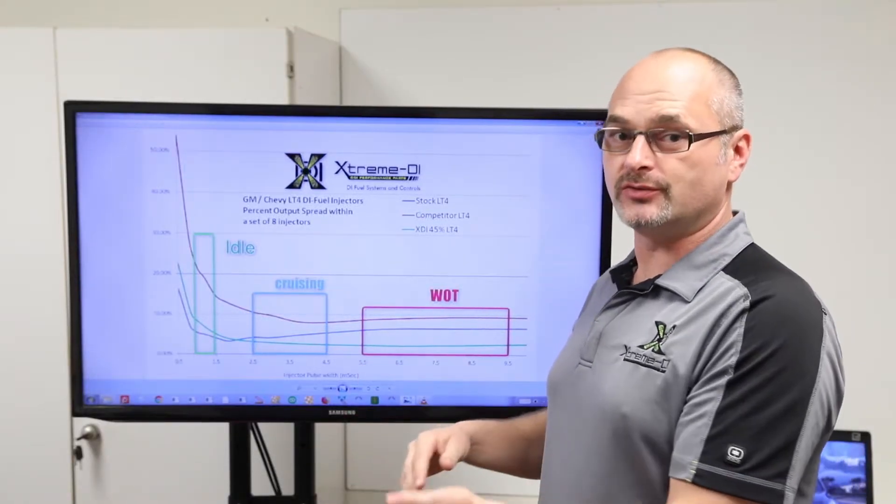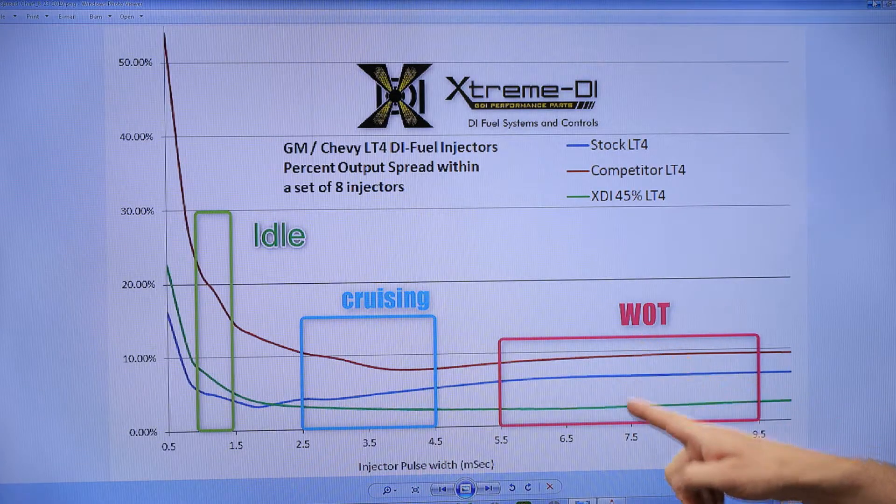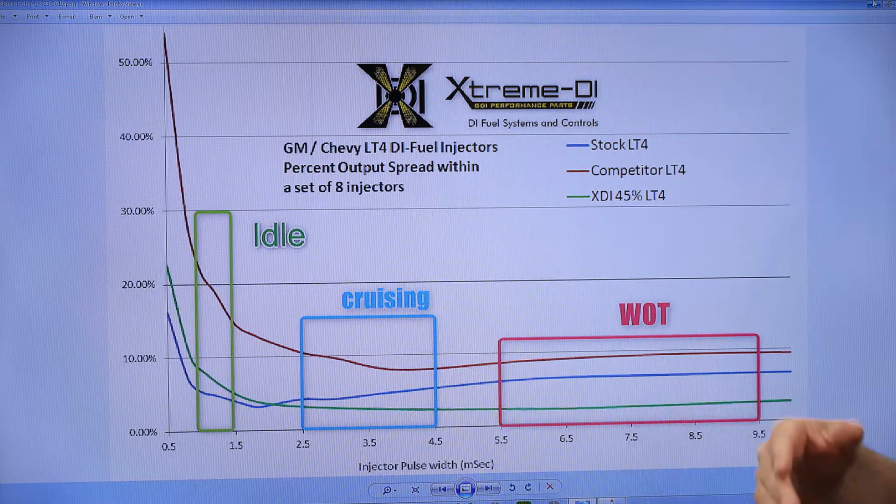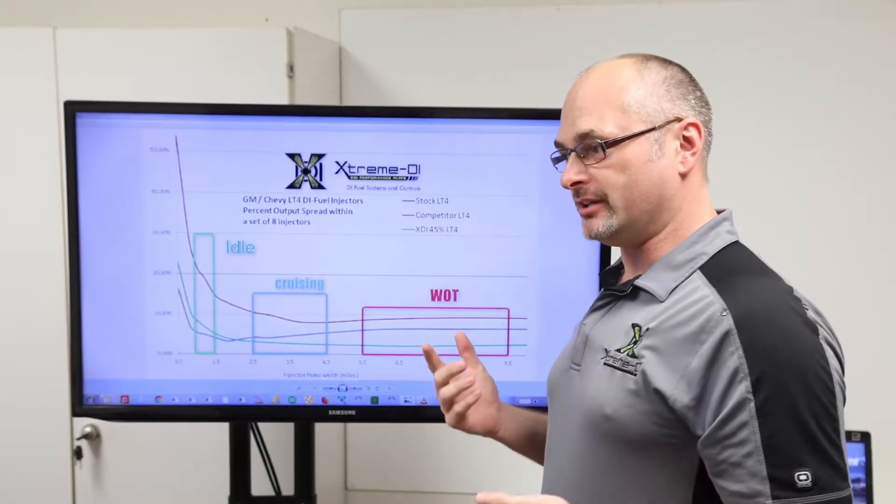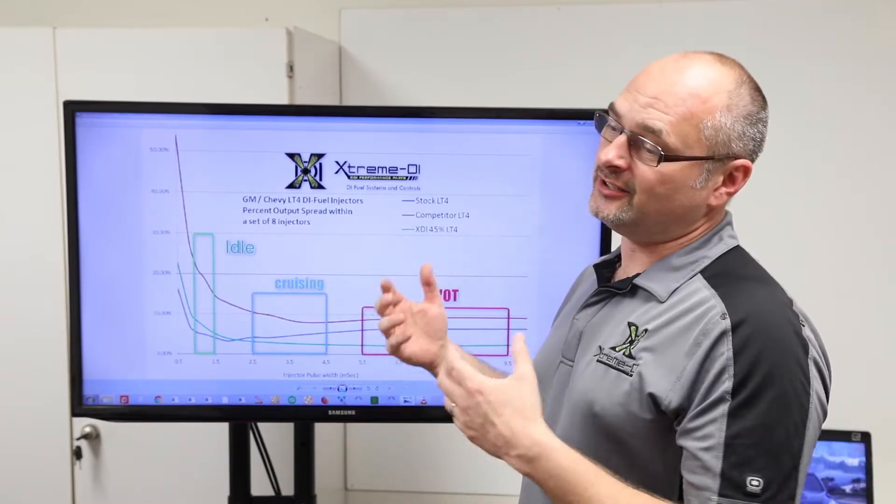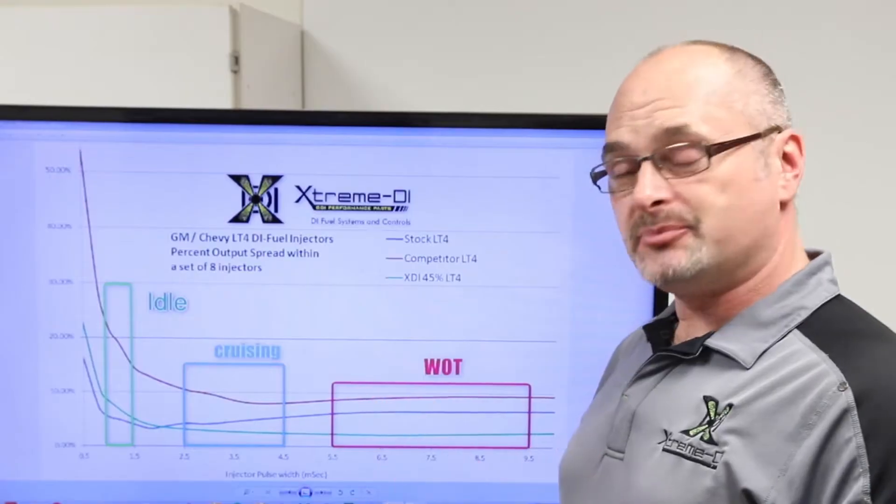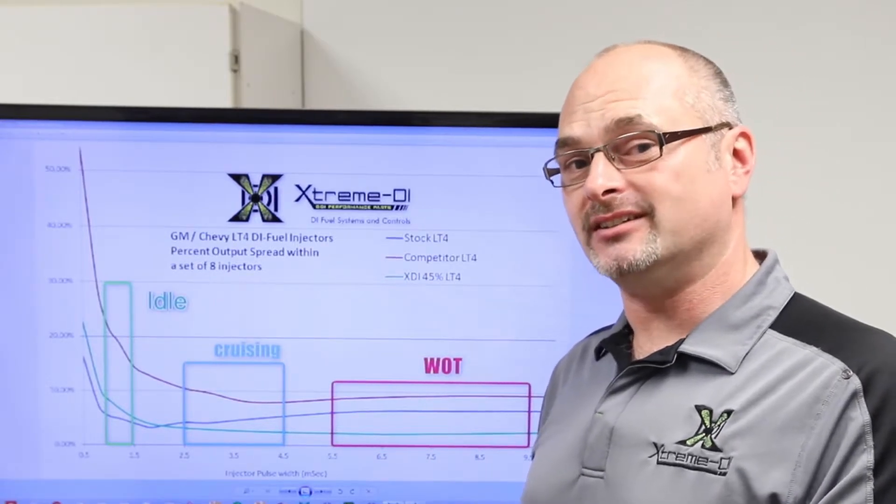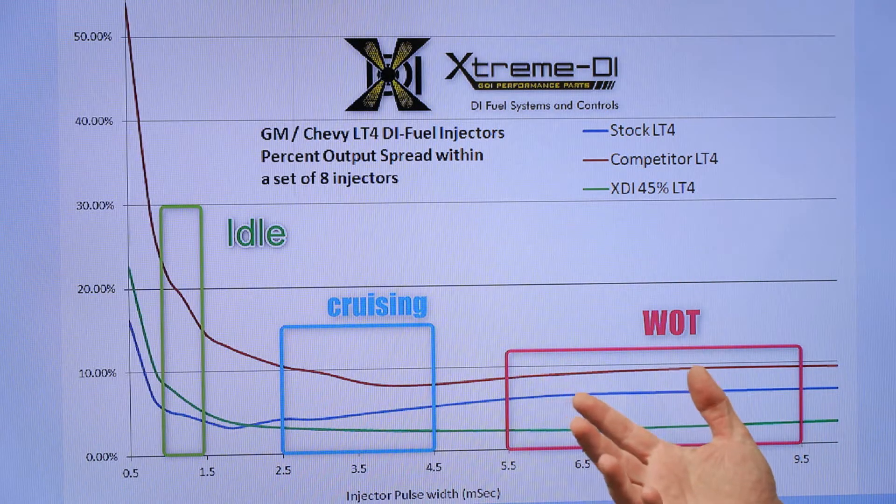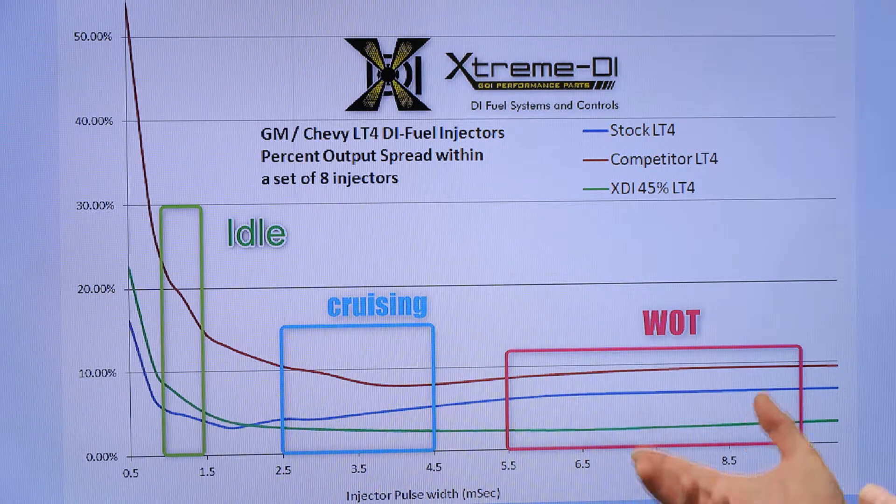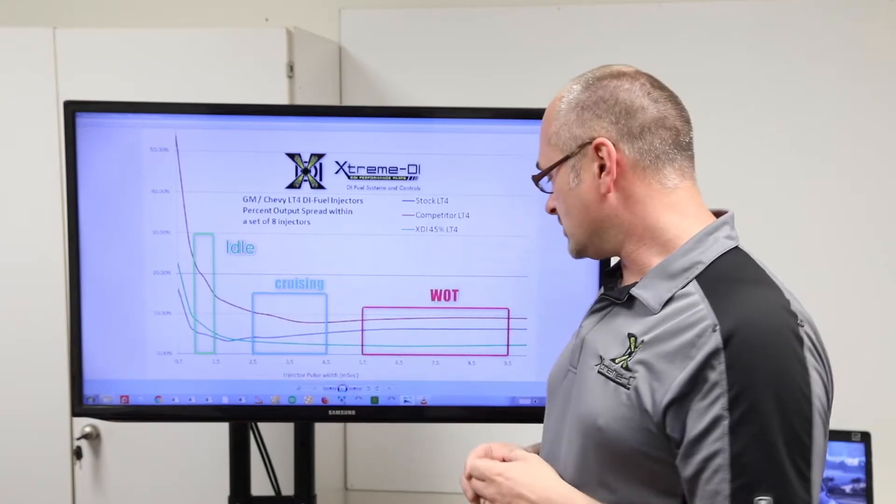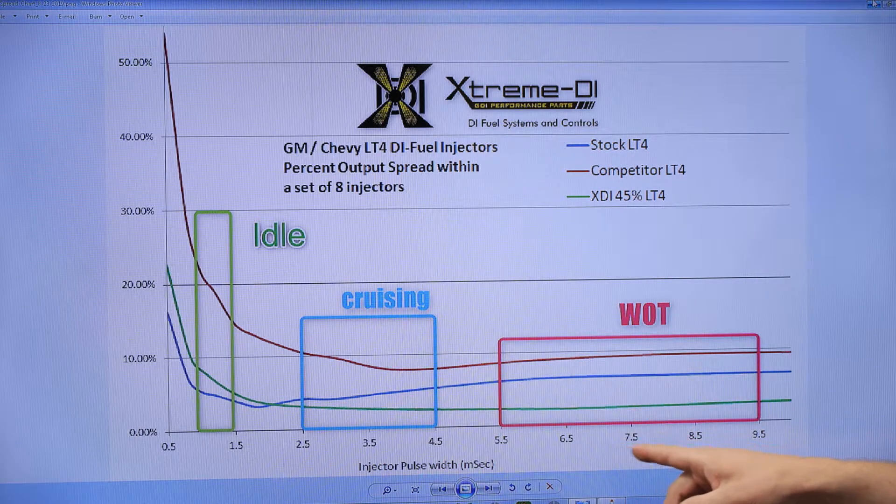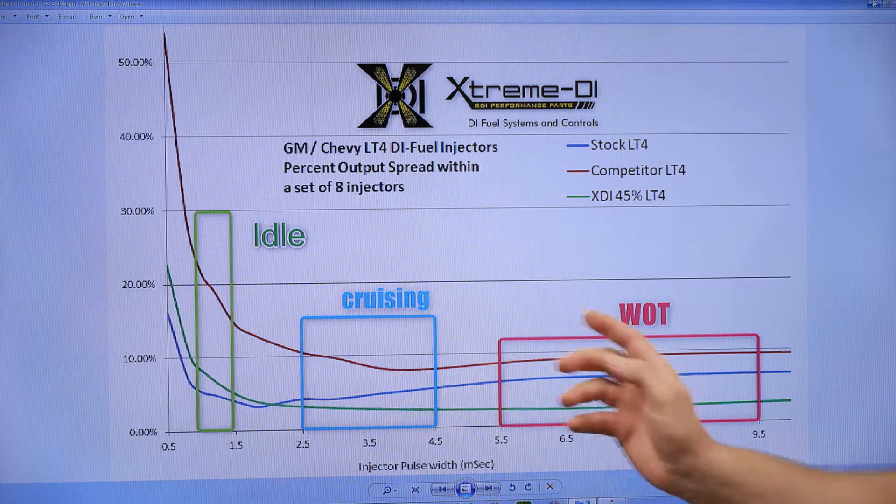Five to six percent between the lowest flowing and the highest flowing injector. When we go to wide open throttle, the competitor injector is in the area of nine percent. Just keep in mind, wide open throttle, nine percent difference. You have eight cylinders on this engine. Eight percent difference between the eight cylinders means that one cylinder is eight percent leaner than another cylinder. The stock injector in this area is between six to seven percent. And our injector, even in the wide open throttle area of seven to eight milliseconds, is around two percent.